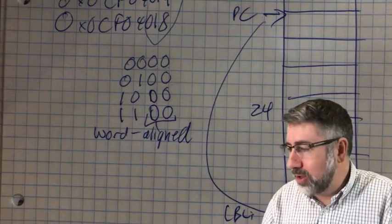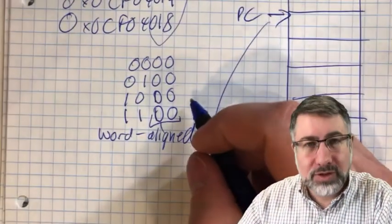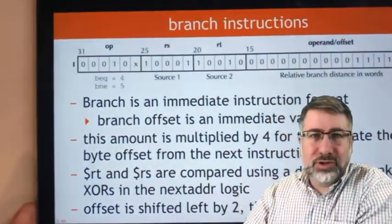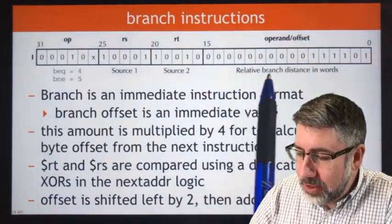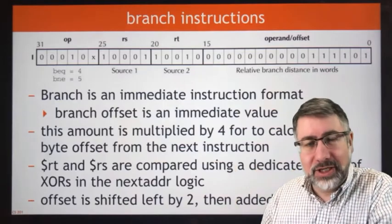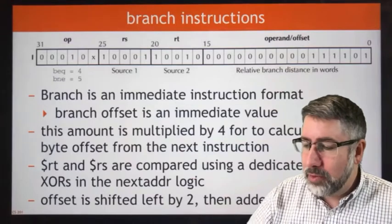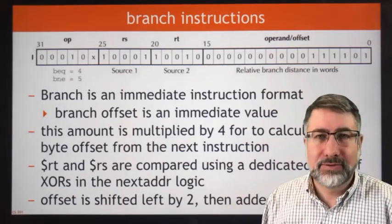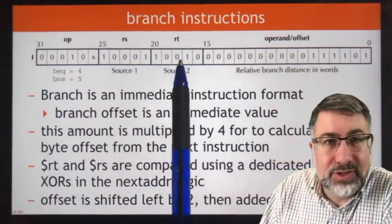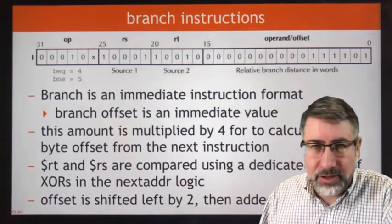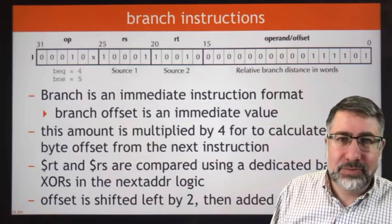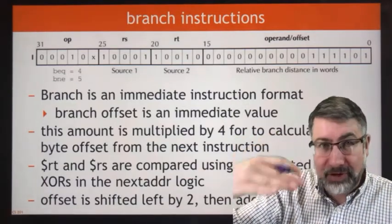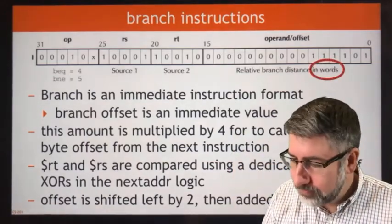This is why when executing a branch, it's PC plus four — because we're already pointing at the next instruction — plus the sign-extended immediate value shifted by two. Start at six, shift by two to get 24: that's how many actual memory bytes we add to the program counter. The branch instruction is in I-format. The immediate field stores the relative branch distance in words. We store the offset in words so we have a larger range of possibilities. We compare the two registers and if they're equal we take the branch for BEQ; if they're not equal we take the branch for BNE. That offset is multiplied by four to give the relative distance from PC plus four to the new instruction.